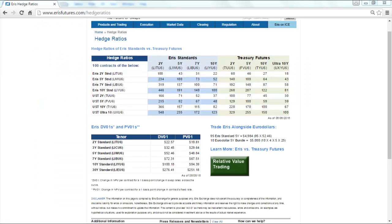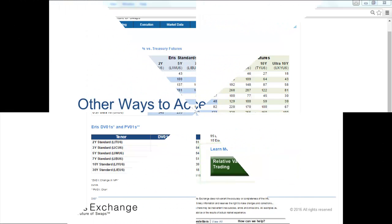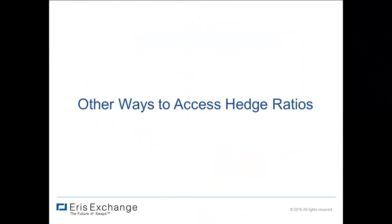Lastly, viewers can learn more about Hedge Ratios in Relative Value Trading by clicking the Relative Value Trading icon at the bottom of the page. Hedge Ratios can also be found in platforms like Trading Technologies and Bloomberg. Let's go through a quick example of how hedge ratios for an Eris 7-year standard against a 10-year Treasury future can be extracted in Bloomberg.